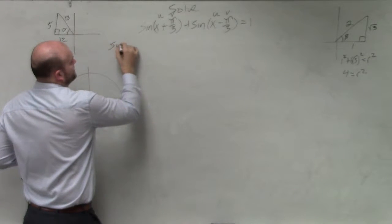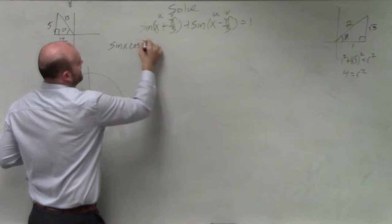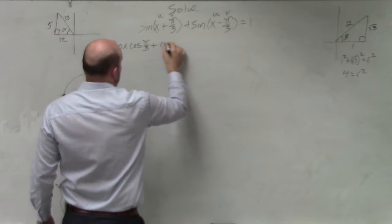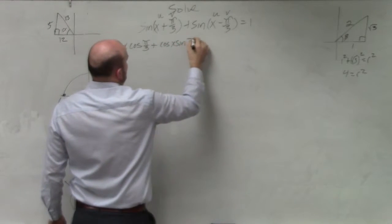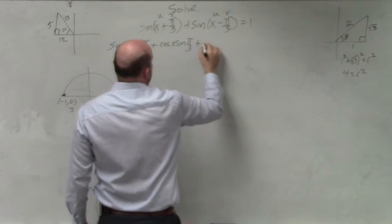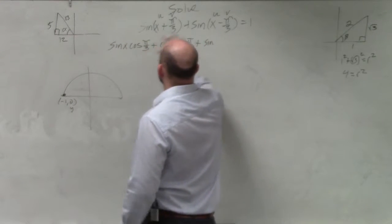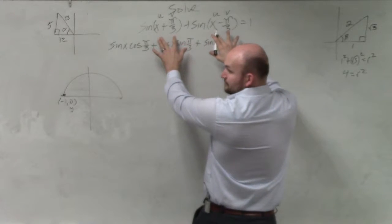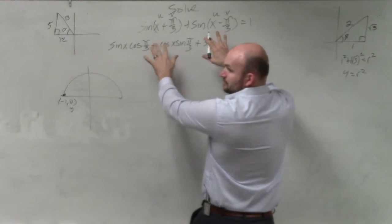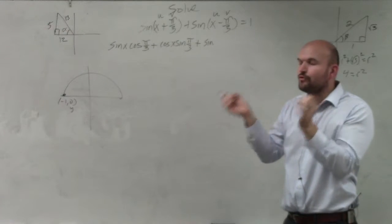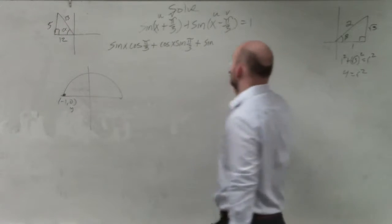So I'm going to have sine of x cosine of pi over 3 plus cosine of x sine of pi over 3. Like these u's and v's are the same. But that one's positive and positive. No, no, no. Remember I told you, the positive and the negatives only tell you which formula to use, OK? Don't get that confused.